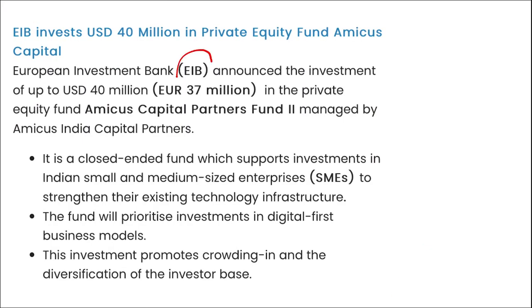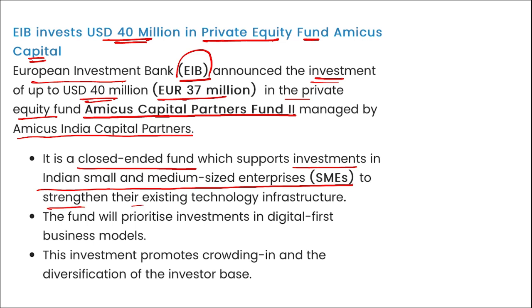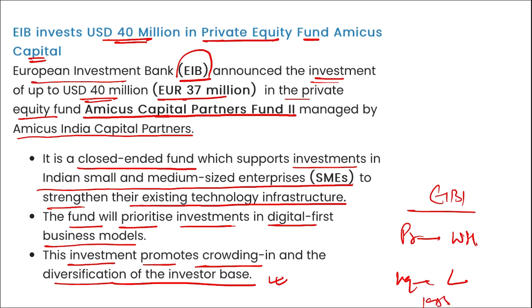EIB — the European Investment Bank — has invested $40 million in private equity fund Emicus Capital. The European Investment Bank announced an investment of up to $40 million (37 million euros) in Emicus Capital Partners Fund 2, managed by Emicus India Capital Partners. This is a closed-ended fund supporting investment in India's small and medium-sized enterprises to strengthen technology infrastructure. The fund will prioritize investment in digital-first business models. European Investment Bank President: Werner Hoyer; headquartered in Luxembourg; established in 1958.